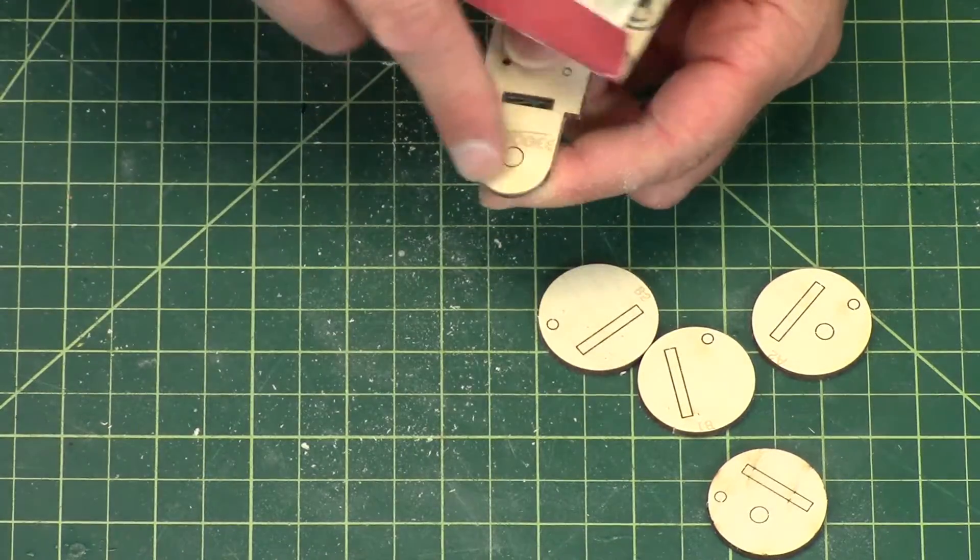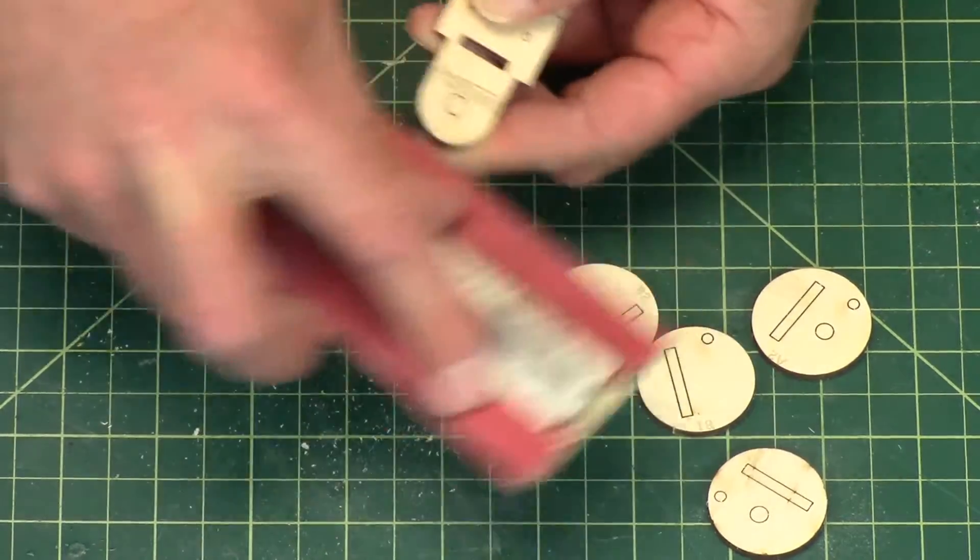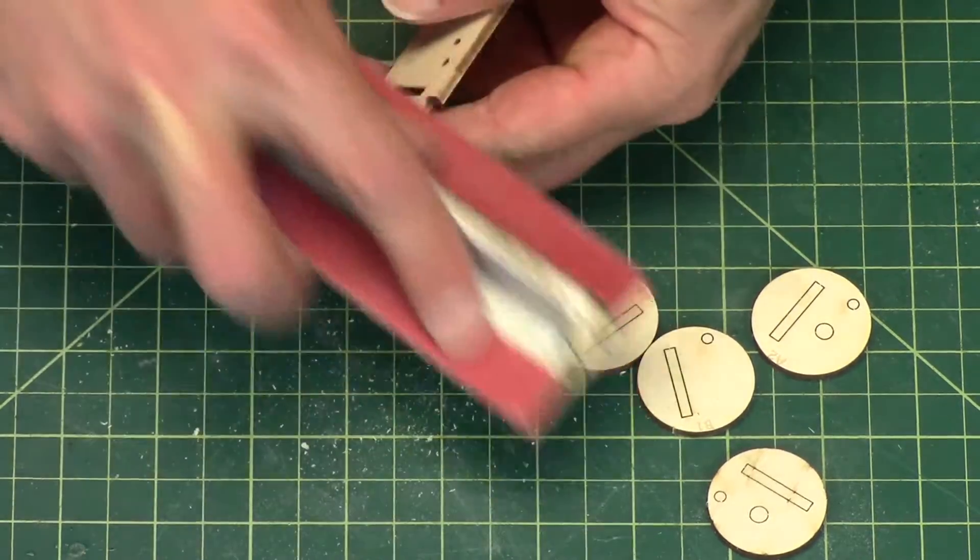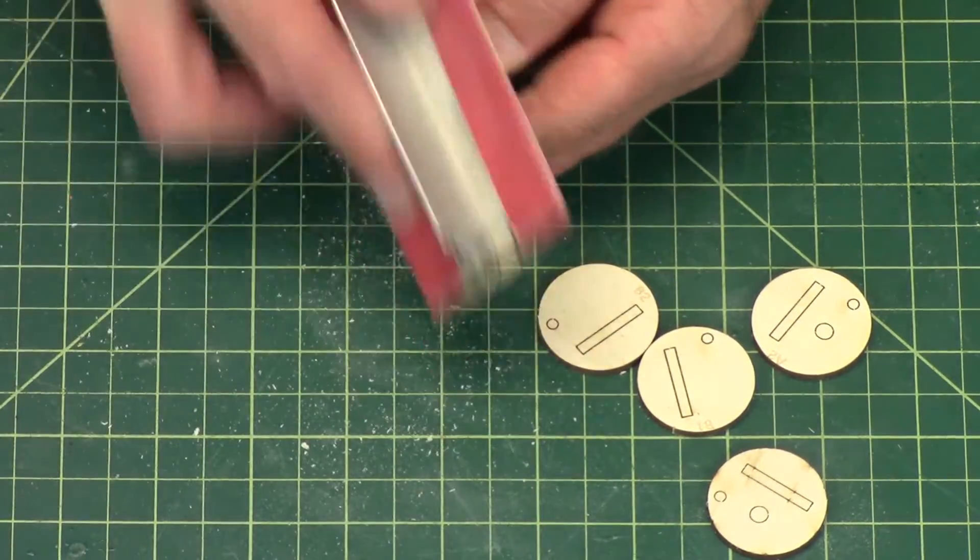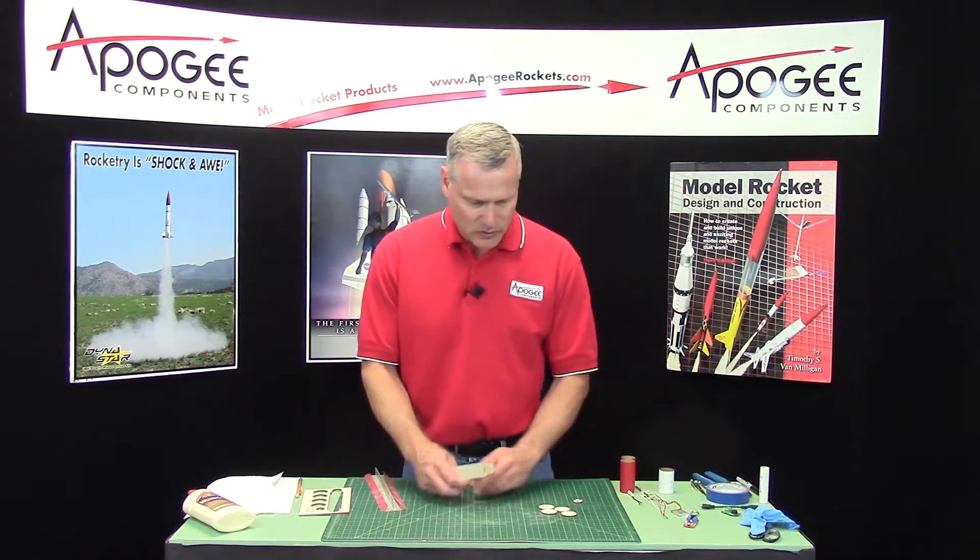And if you want to chamfer this edge here, that's the edge that is removable. That's where the bulkhead goes. I'm just kind of rounding that just a little bit. That will make it easier to take off and put on.